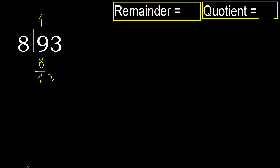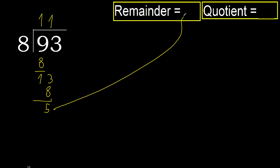Next, 13. 8 multiplied by 2 is 16 — 16 is greater. Multiplied by 1 is 8, it is not greater. 13 minus 8 is 5. Next, there is no number, therefore finish it. Remainder 5.